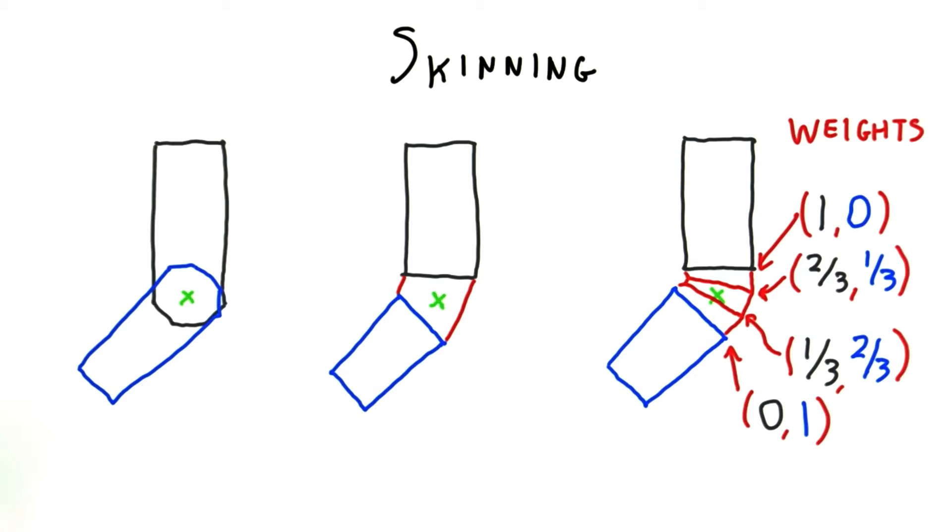The basic solution is surprisingly simple. Each vertex is assigned a weight. This weight determines how much each rigid part's position affects the vertex. The top and bottom of the tube stay connected to their rigid body parts, so that body part's influence has a weight of one.